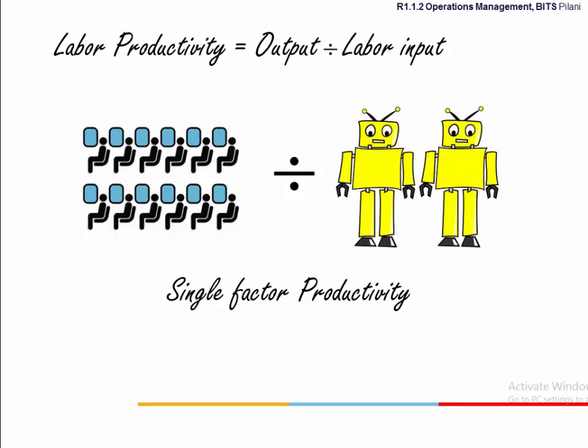Can we replace people with robots and claim better productivity? This question cannot be answered with simple labor productivity. We require a robust productivity measure that will include more than just one input factor. Such a measure is known as multi-factor productivity.